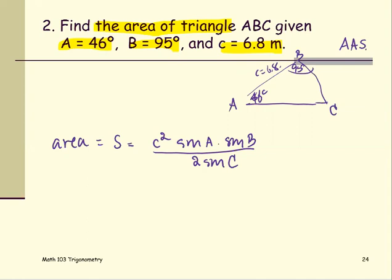Since angles A and B are known, we can find angle C by using 180 degrees minus the sum of 46 degrees and 95 degrees. That comes out to be 39 degrees.